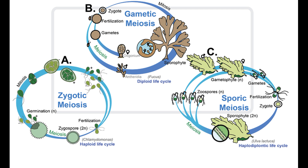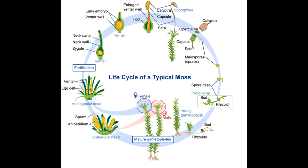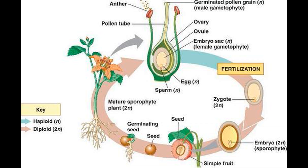Plants have something called alternation of generations, with distinct haploid gametophyte and diploid sporophyte stages, each having at least a few cycles of mitotic cell divisions. The number of mitotic divisions in each stage aren't always equal in different groups. In nonvascular plants, the gametophyte grows separately, but it is diminished and highly dependent on the sporophyte. In flowering plants, the gametophyte stage consists of just a few cells.